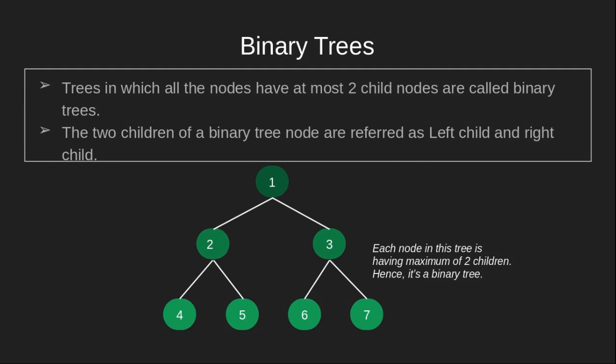Now let's look at a particular type of tree called a binary tree. The main property is that all nodes in this tree can have at most two child nodes — that means any node can have zero, one, or two children. Since each node has only two children, we call one the left child and the other the right child. In this example, node one has two children: two and three. Node two has children four and five, node three has children six and seven, and nodes four, five, six, and seven are leaf nodes with zero children.